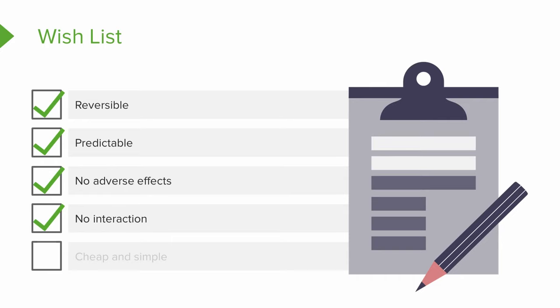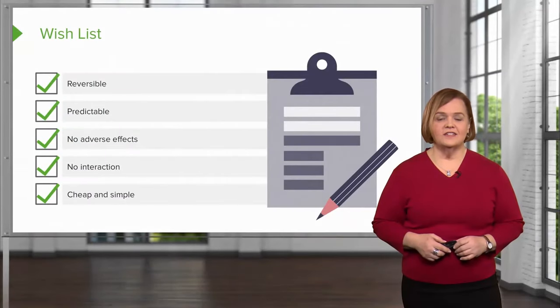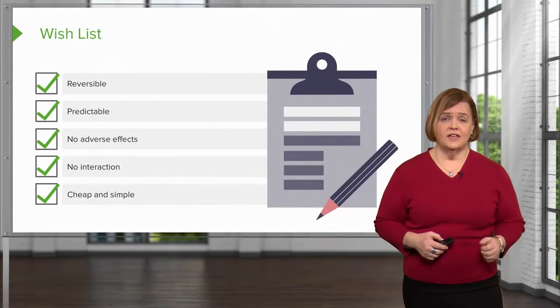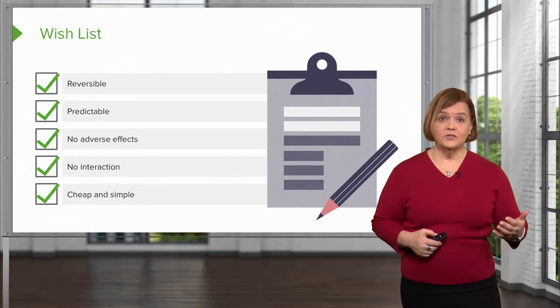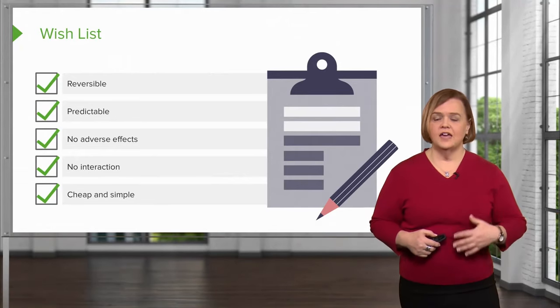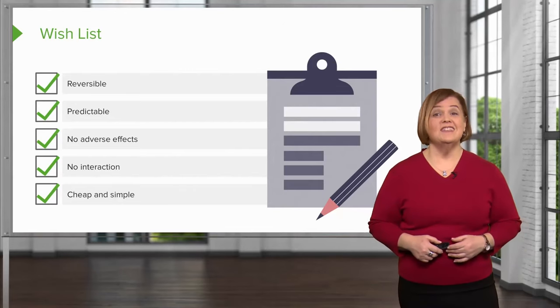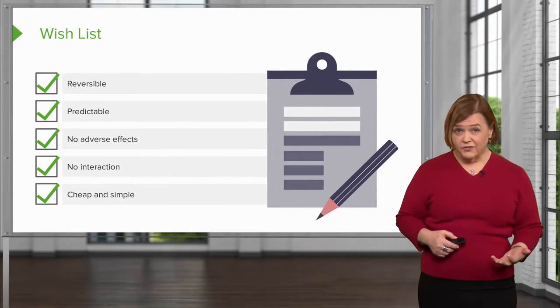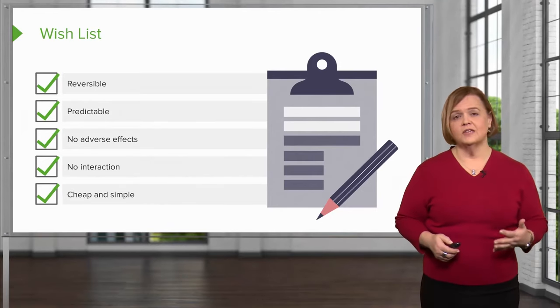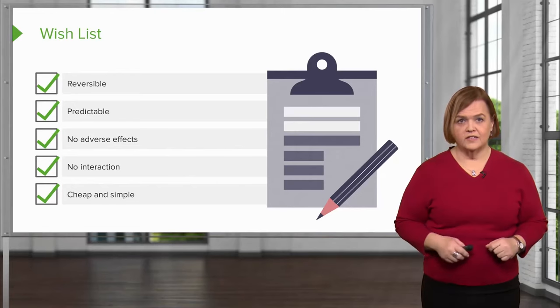No interactions — when you take two medications, you have the potential to have an interaction. When drugs start working together, they can either significantly increase the action of the drug or they could diminish the action of the drug. And finally, we want it to be cheap and simple. Now, if you think a drug exists that meets all three core criteria — safe, selective, and effective — plus reversible, no adverse effects, no interactions, and cheap and simple, it simply doesn't exist. We try for those things. It's a wish list, and we get as close as we can, but many drugs can't meet all of these criteria.